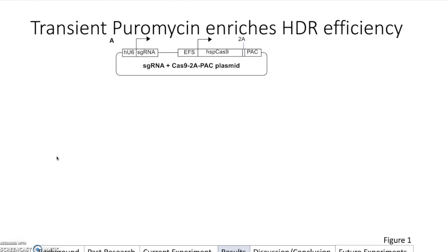This brings us into their Figure 1, where they show that transient puromycin enriches for HDR efficiency. On Figure 1A, what you can see right here, we'll focus more on the left. You have your guide RNA, and what they did was they designed a guide RNA that focuses on their chosen disease-relevant site. So they chose the BEST1 mutation site.